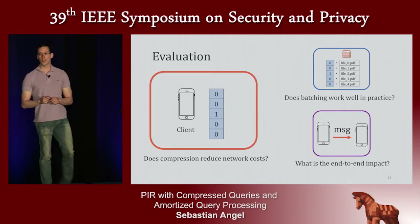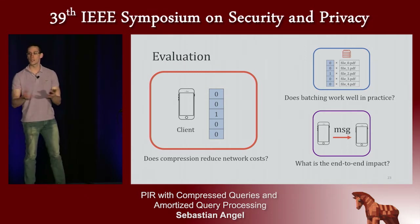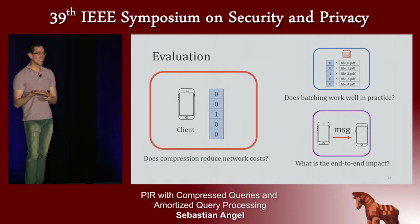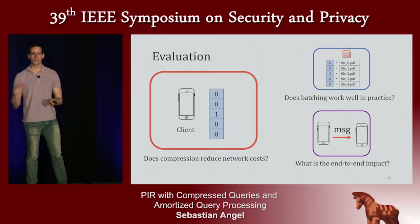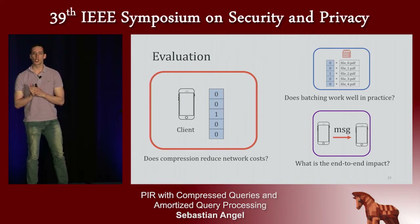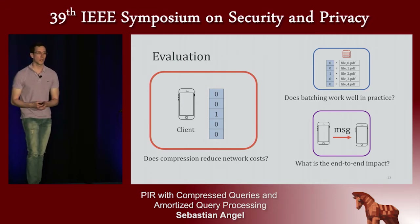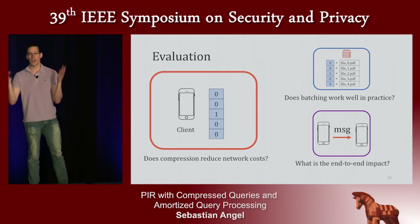In the paper, we answer three evaluation questions. First, does compression reduce network cost and what is the overhead of decompression? Second, does batching work well in practice? Our batching scheme is probabilistic — if the client wants to get 20 elements, sometimes it might only get 19 or 18 or 15. We wanted to quantify how often queries fail and whether that's acceptable. It comes out to about one in a billion queries failing.